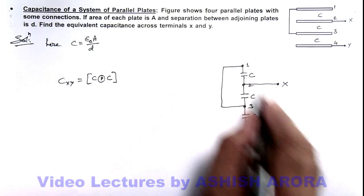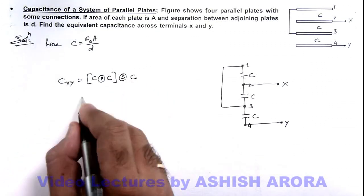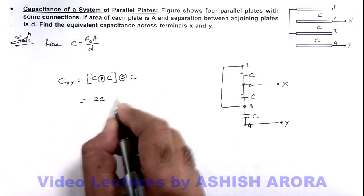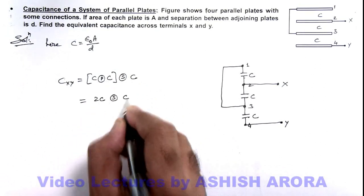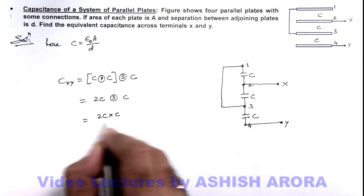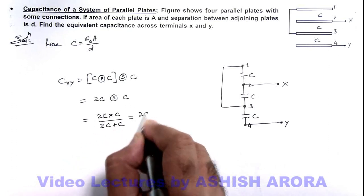And this group is connected in series with another capacitor. So here we can write c and c in parallel as 2c, which is in series combination with c. So this can be written as 2c multiplied by c by 2c plus c, and that is 2c by 3.